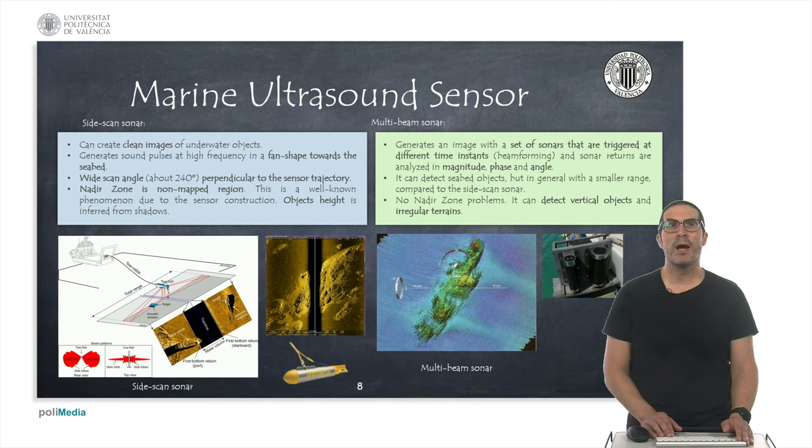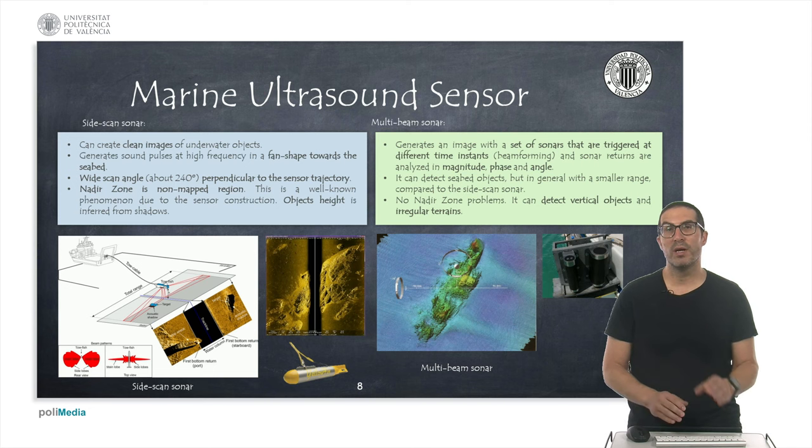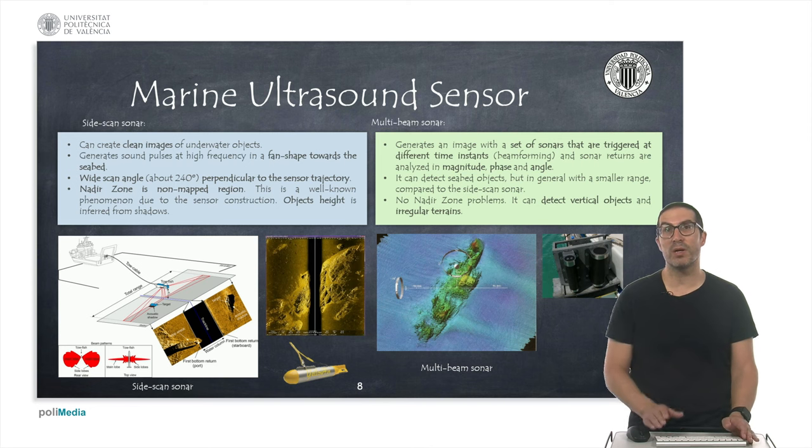On the other hand we have multi-beam sonars that are used to point at an area of the seabed but not necessarily on the sides, and they can be incorporated in autonomous underwater vehicles. And several beams are triggered, and by processing where they were triggered and the phase and the magnitude and the angle that they have been triggered, then we can get a precise image of the seabed.